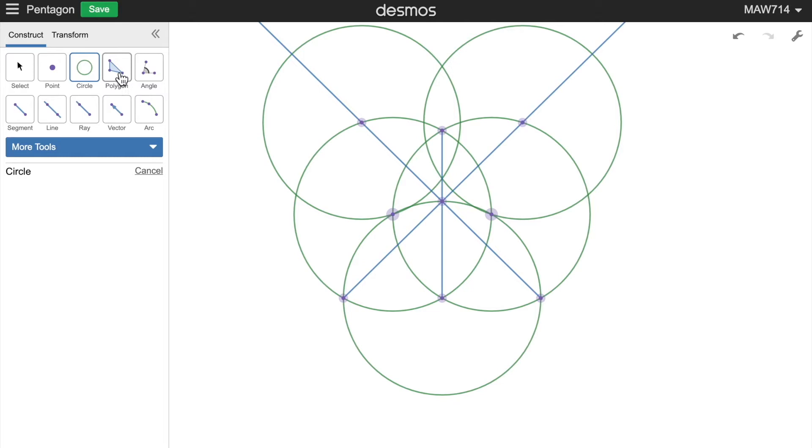Now finally we actually have to make the pentagon by using the polygon tool. Select all of the points of the pentagon one by one, click on one of the points you've already made to finish it, and there we go. We have a pentagon.